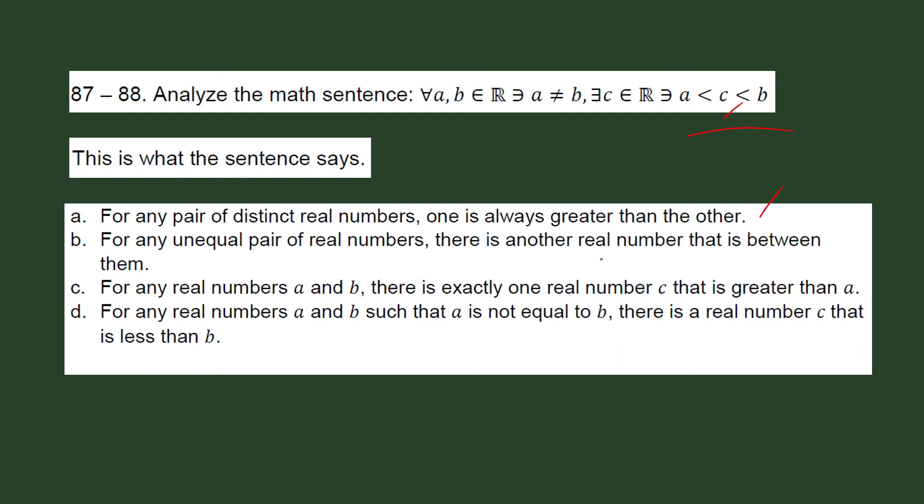For any unequal pair of real numbers, there is another real number that is between them. It sounds right. It sounds right.